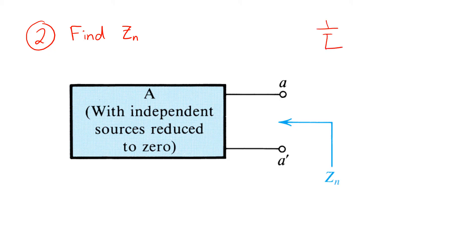That is, voltage sources are replaced with short circuits. Current sources are replaced with open circuits.